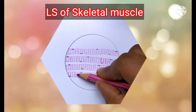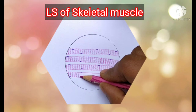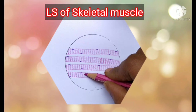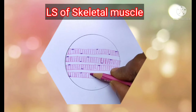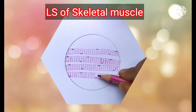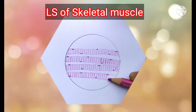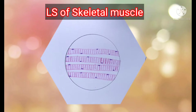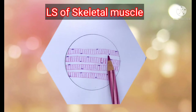When the muscle contracts, the dark band remains the same width whereas the light band decreases in size. When the muscle is stretched, the dark band width also remains the same. So remember: the width of the dark and light bands should be equal.